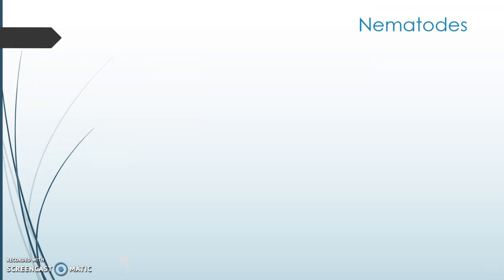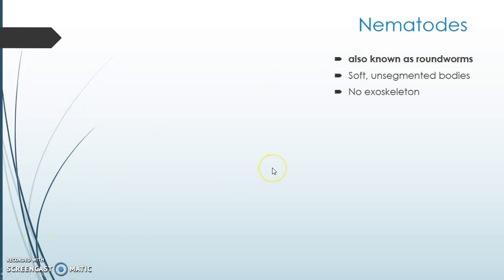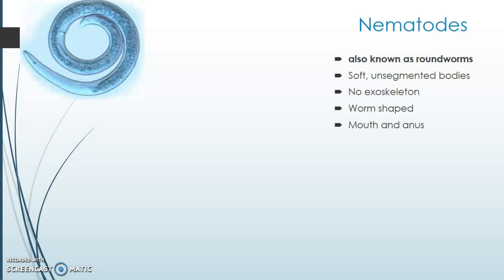Here's our second of three groups of worms, and they're called nematodes. These guys aren't as nice as the previous group. They're also known as roundworms. Like the previous worms, they have soft bodies, but they aren't segmented. They don't have an exoskeleton and they're worm-shaped, like this guy. Again, they have a mouth and an anus, so things just pass right on through them in a continuous cycle, like us.